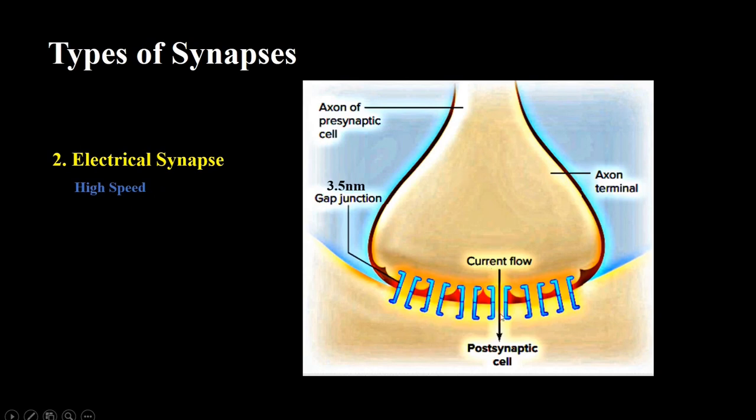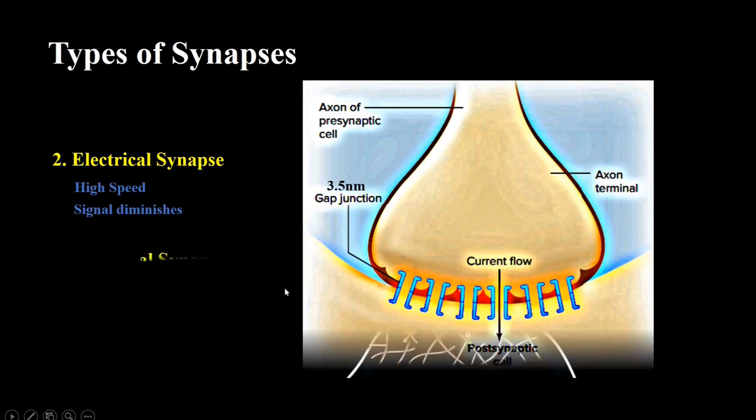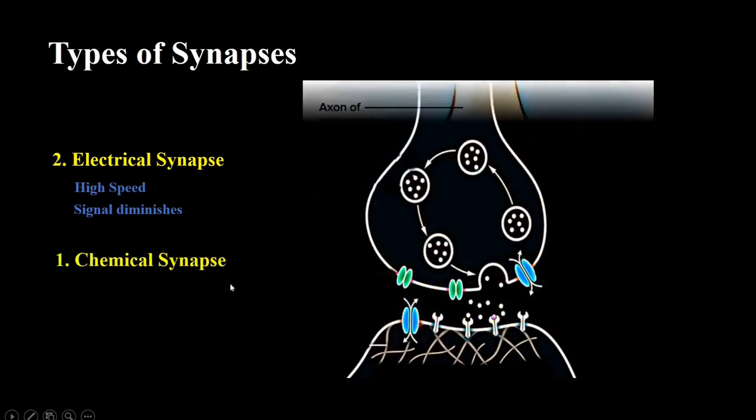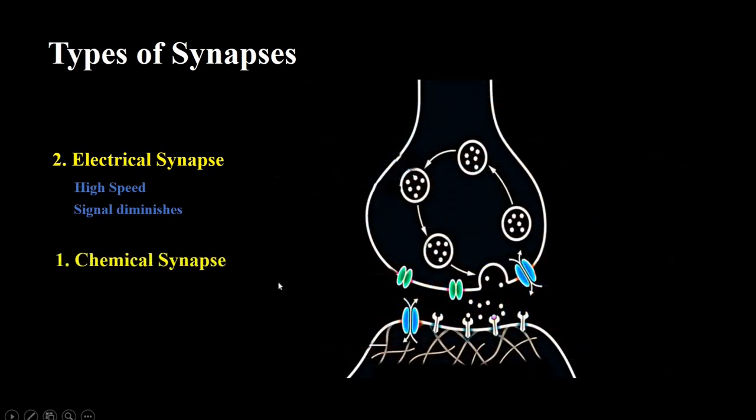The electrical synapses have the advantage of speed, but the strength of signal somehow diminishes as it travels from one cell to the next cell in case of electrical synapses. Chemical synapses, on the other side, may be slower, but they can transmit a message without any loss in signal strength.